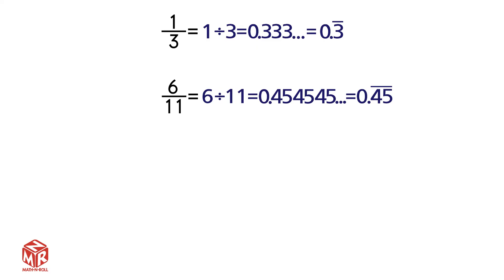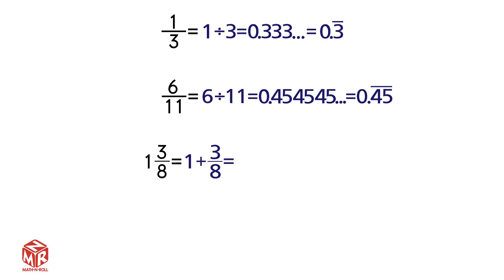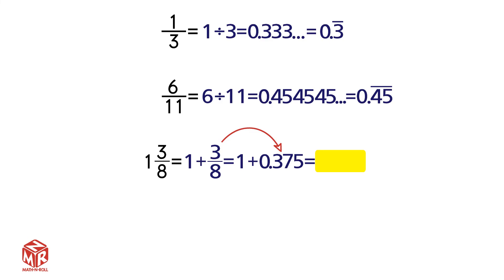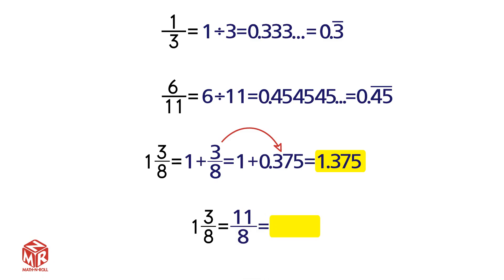Now let's look at how we convert mixed numbers into decimals. We have 1 and 3 eighths, which we can also write as 1 plus 3 eighths. We leave the 1 and convert 3 eighths to a decimal to get 0.375. Now we add the whole number and the decimal to get 1.375. We can also convert it using a different method by converting the mixed number into an improper fraction. 1 and 3 eighths can also be written as 11 over 8. We divide 11 by 8 and get 1.375. The answer is the same with both methods, so you can pick which one you like more.